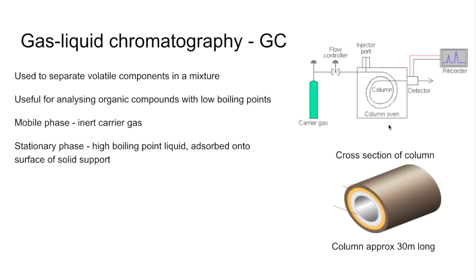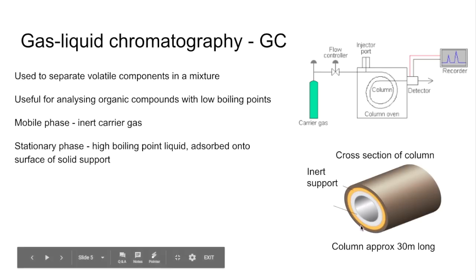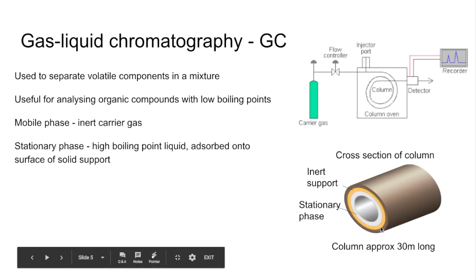Here's a cutaway of the column, a cross section. The column is approximately 30 meters long, so it needs to be that long to give the components time to separate out. We've got the inert support material, the orange colored circle, and then the stationary phase. That's a liquid that's been pasted onto the surface of the solid support, and the components are going to travel through the tube.